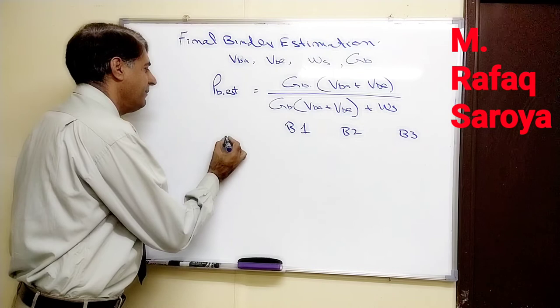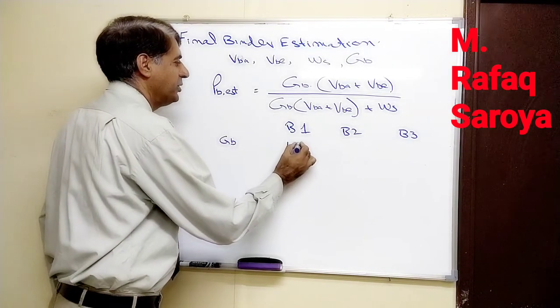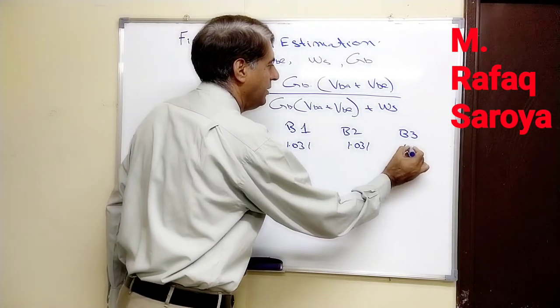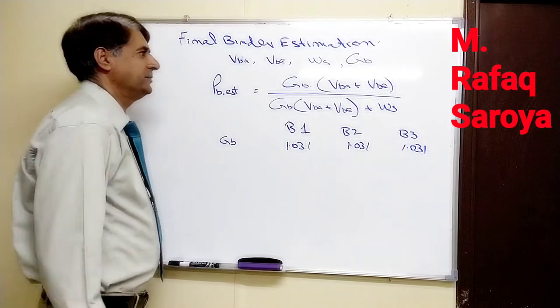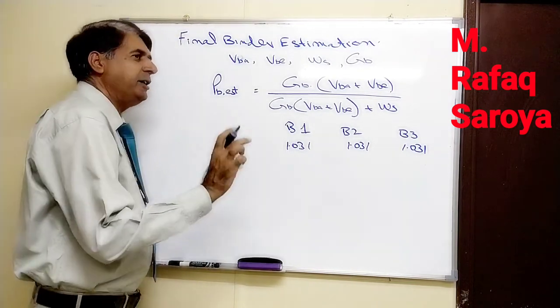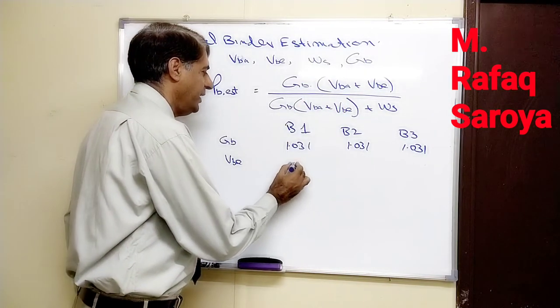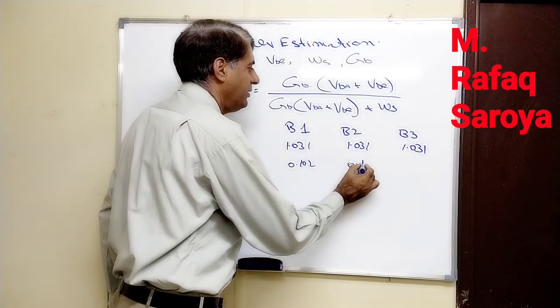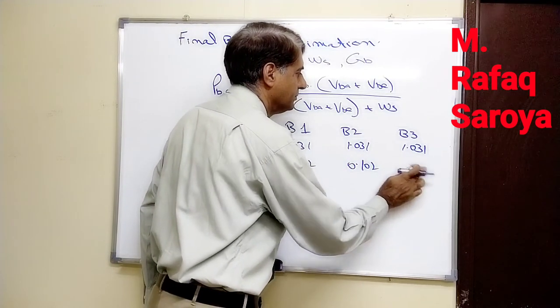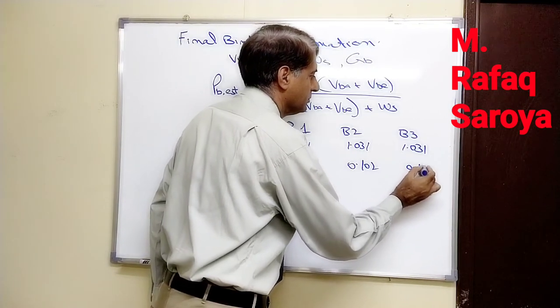This GB you already know - it is constant: 1.031 for all three blends.